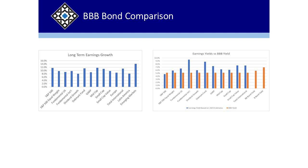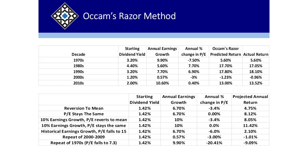We look at a lot of different things, including earnings expectations. I also use a method called the Occam's Razor method. Occam's Razor — the simplest explanation is probably the right one — is a methodology favored by John Bogle. You take the starting dividend yield, add annual earnings growth or your expectations thereof, then look at the annual change in the price-to-earnings ratio, and that gives you an expected return. It's been very accurate over the years — not perfect, but pretty accurate.